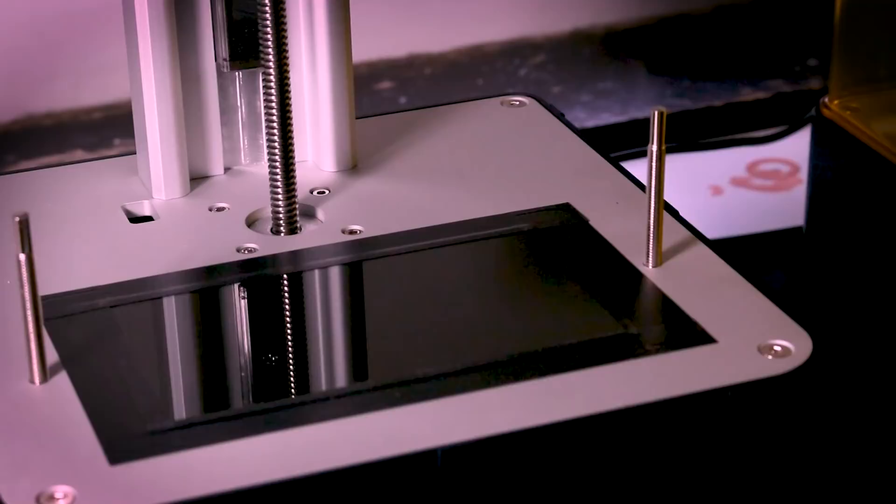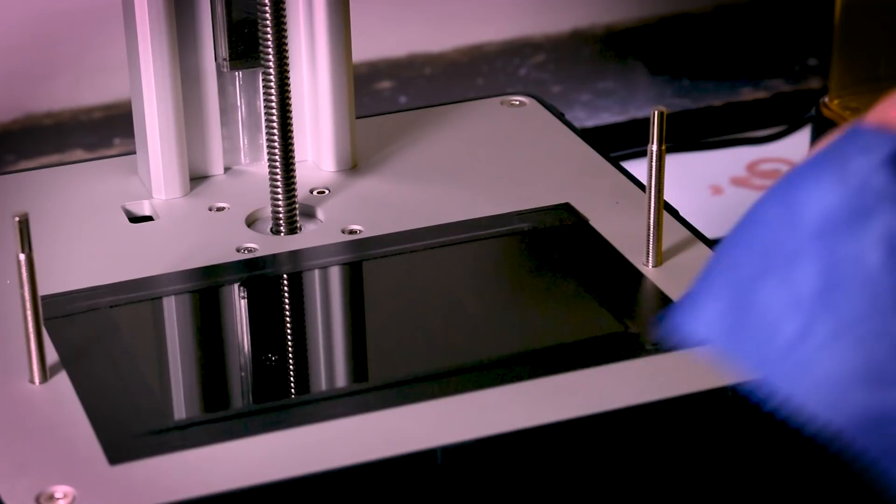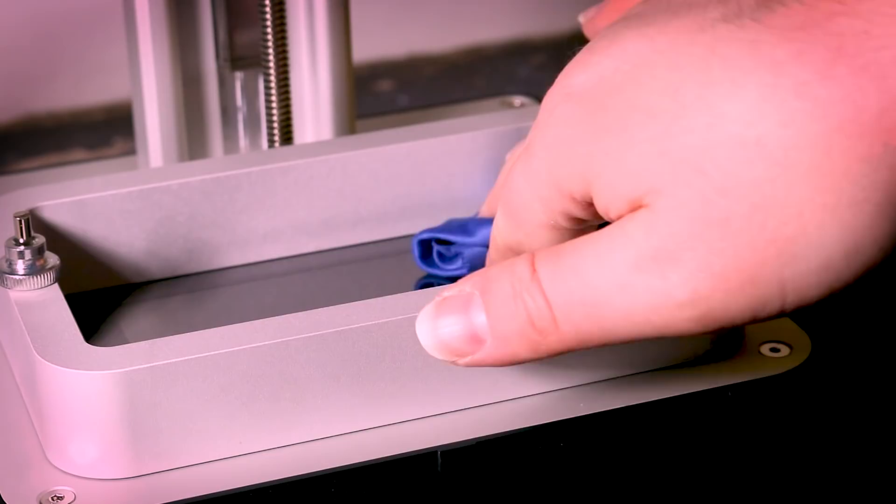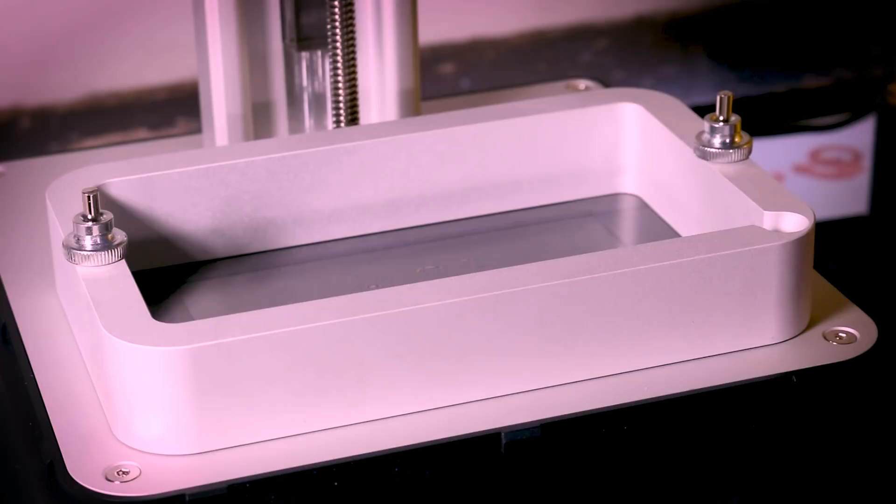Before replacing the goo tray, I made sure to clean both the LCD screen and the tray itself using a microfiber cloth, removing any dust or debris and being careful not to scratch anything. After this part, I spent the next few days doing test prints, learning the workflow, and generally making a mess.